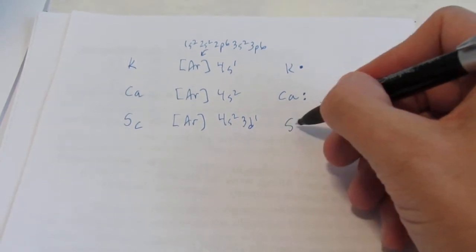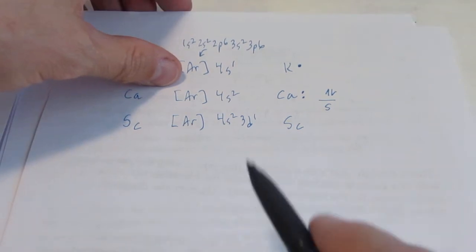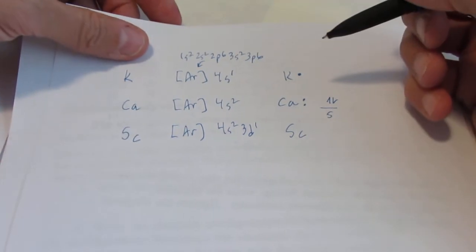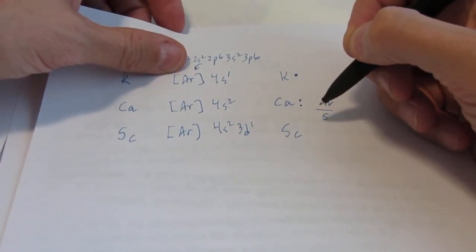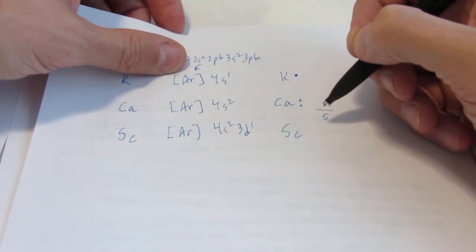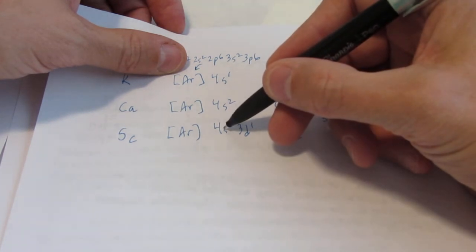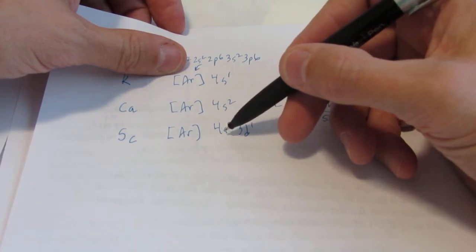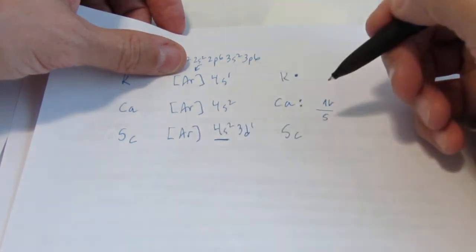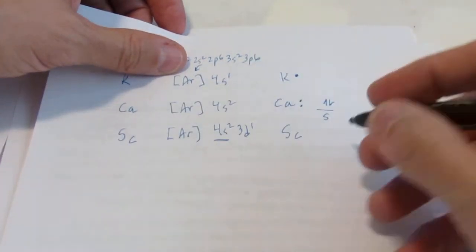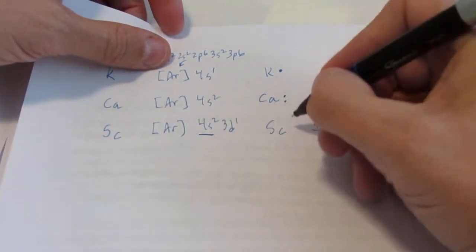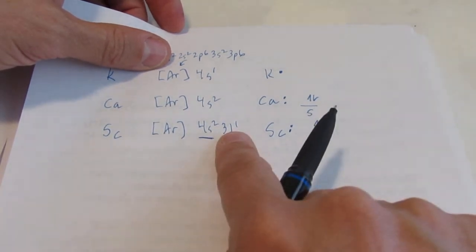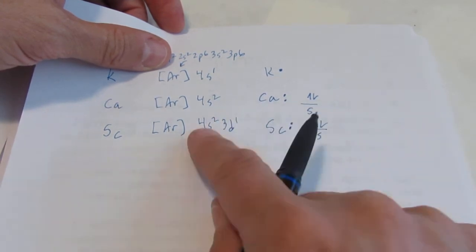Now what's its dot picture going to look like? If you say it will have one dot in it, you haven't been listening. If you say it will have three dots in it, you haven't been listening. Remember the dot picture only contains the valence electrons. And the valence electrons are the ones in the highest energy level. Now remember, the fourth energy level is farther away than the third. Remember the 4S was just filled first because it was easier to fill than the 3D. But it is farther away. So the highest energy level for scandium is the fourth. The S sublevel has a pair of electrons in it. So scandium's dot picture would have two dots.